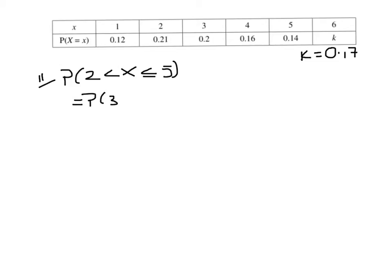So that would be the probability of 3 plus the probability of 4 plus the probability of 5. 0.2 plus 0.16 plus 0.14, so that is 0.5.